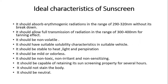The ideal characteristics of sunscreen — prior to formulation, the requirements are: it should absorb erythemogenic radiations in the range of 290 to 320 nanometers without breakdown; it should allow full transmission of radiation in the range of 300 to 400 nanometers for tanning effect. Overall efficacy should cover wavelengths from 250 to 400 nanometers. It should be non-volatile, have suitable solubility characteristics in the vehicle, and be stable to heat, light, and perspiration.